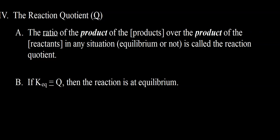So it looks very similar to the definition of the equilibrium constant. It is the ratio of the product of the concentrations of the products over the product of the concentrations of the reactants in any situation, equilibrium or otherwise. And this is called the reaction quotient. So a couple of things regarding the value of Q. If Q is equal to K, that means that the reaction is at equilibrium.